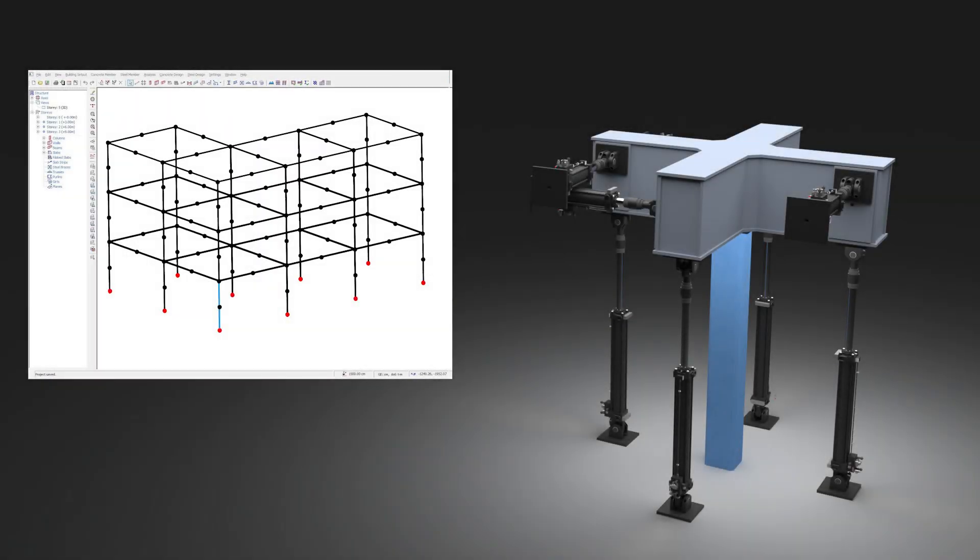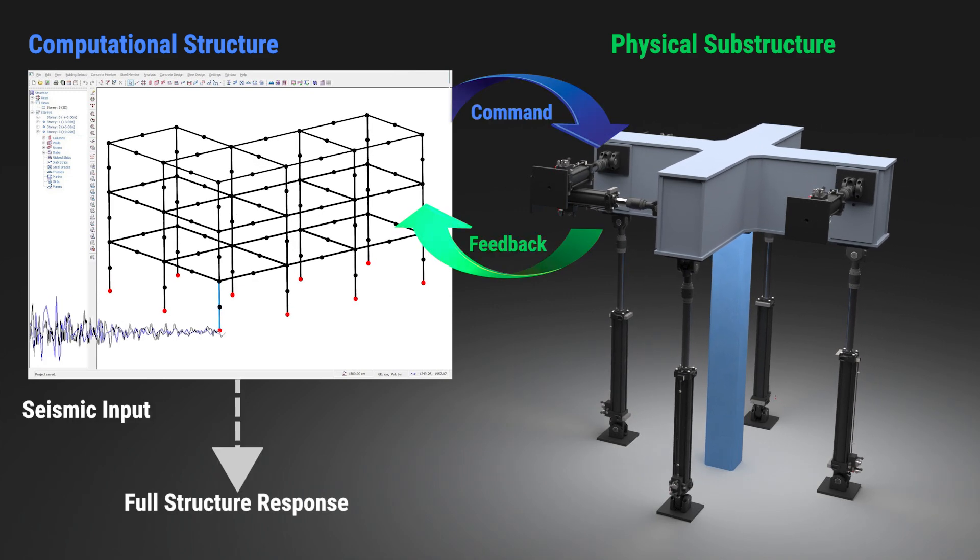Hybrid simulation is an innovative method that combines a computational model of a structural system with physical tests of one or more substructures to provide a complete picture of how earthquake events can affect whole structures such as buildings and bridges without having to physically test them in their entirety.